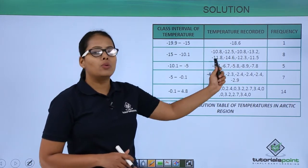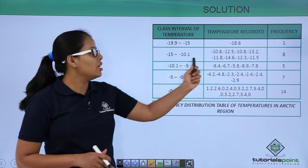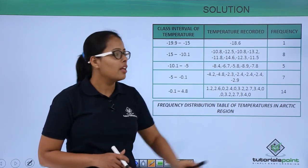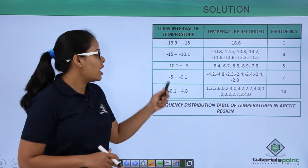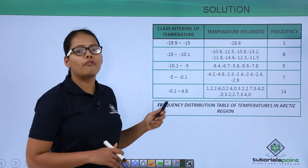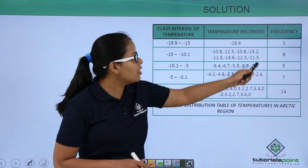So here, all these values are falling under this interval. How many observations are there? There are exactly 8 observations. That's how you're going to do the same thing for all the other intervals and get the frequency.